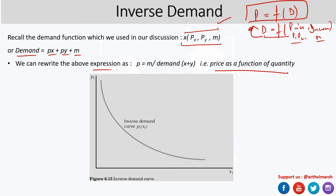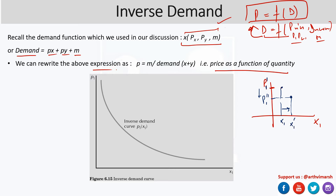In this figure, as the price of commodity 1 decreases — say from an initial price point down to p1 double prime — the demand increases correspondingly. When the good becomes cheaper, you demand more, which makes sense. Further decreasing the price to p1 triple prime gives us another point r, where even more of x1 is demanded.